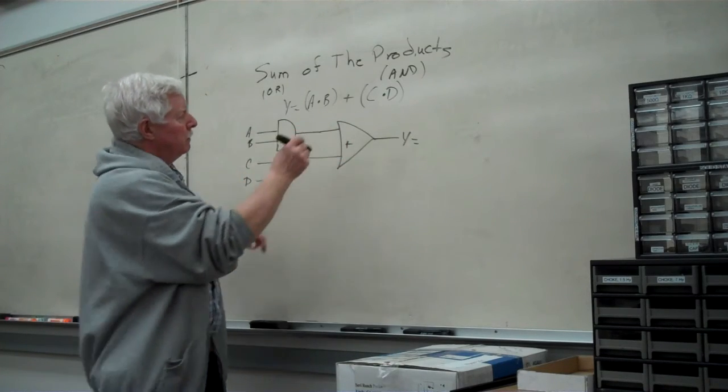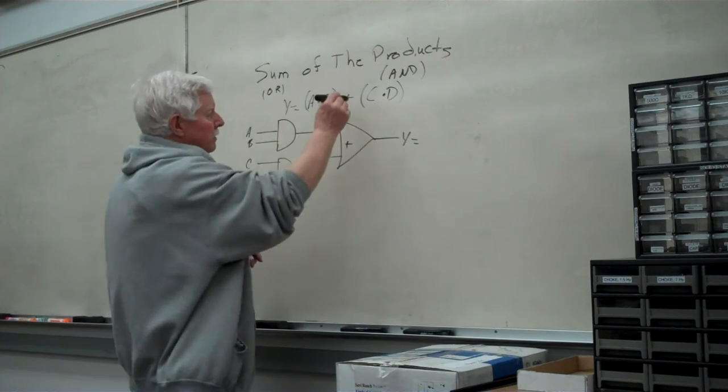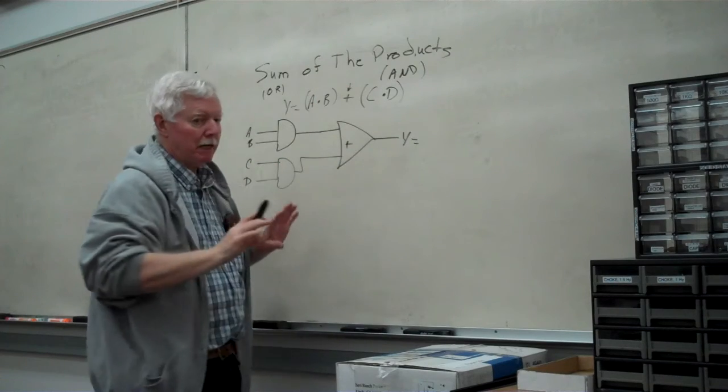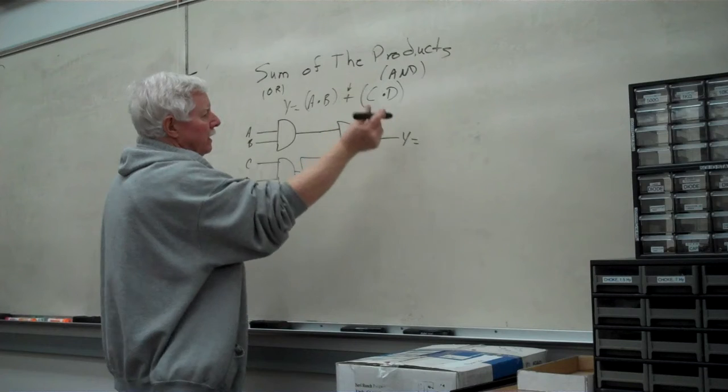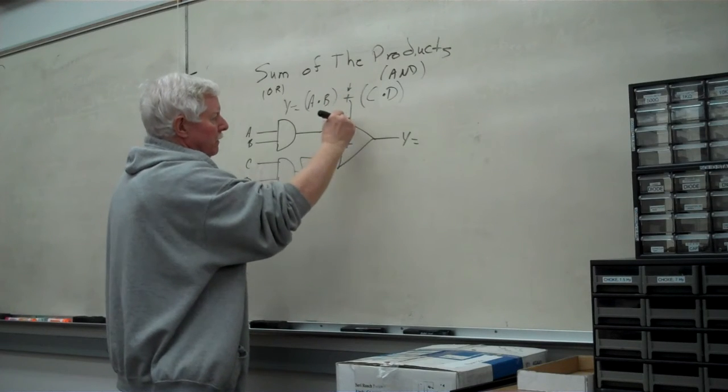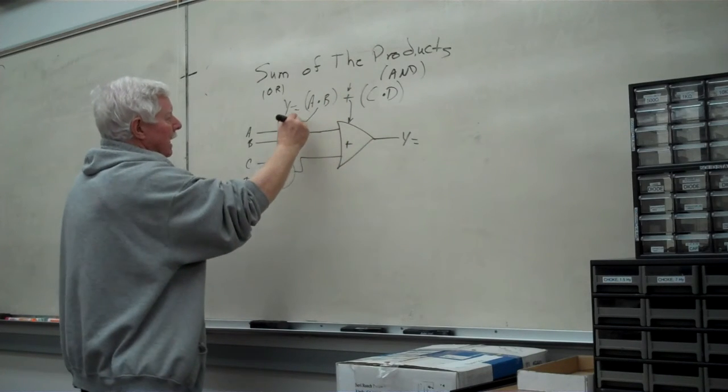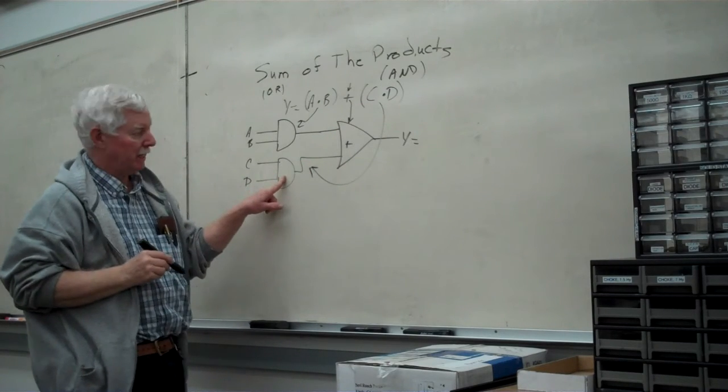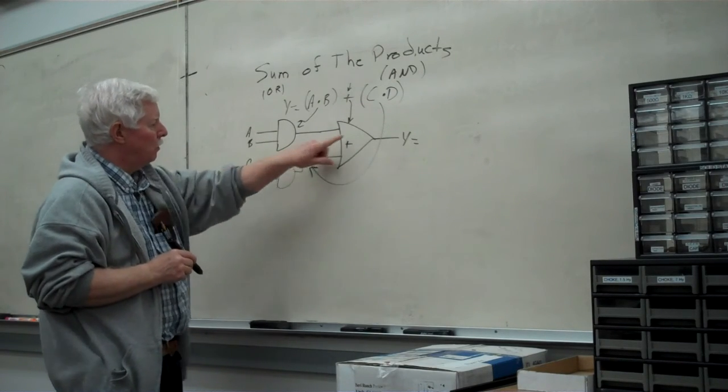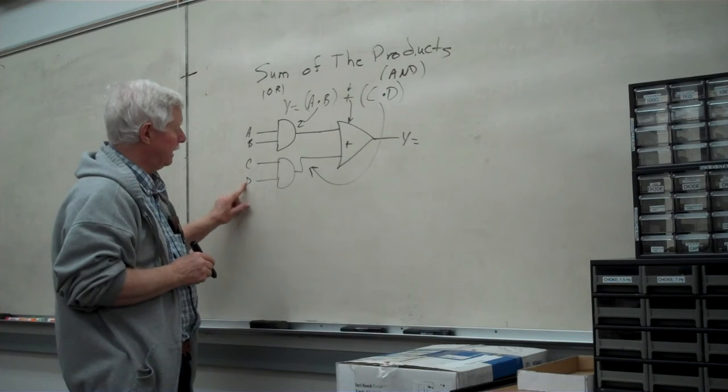So here's our output function. Remember, as in previous videos, this logic operator sitting all by itself refers to the output gate. So OR, then it's going to be this function. The AND, A and B is here. The C and D is this logic gate down below. A and B ORed with C and D at this point.